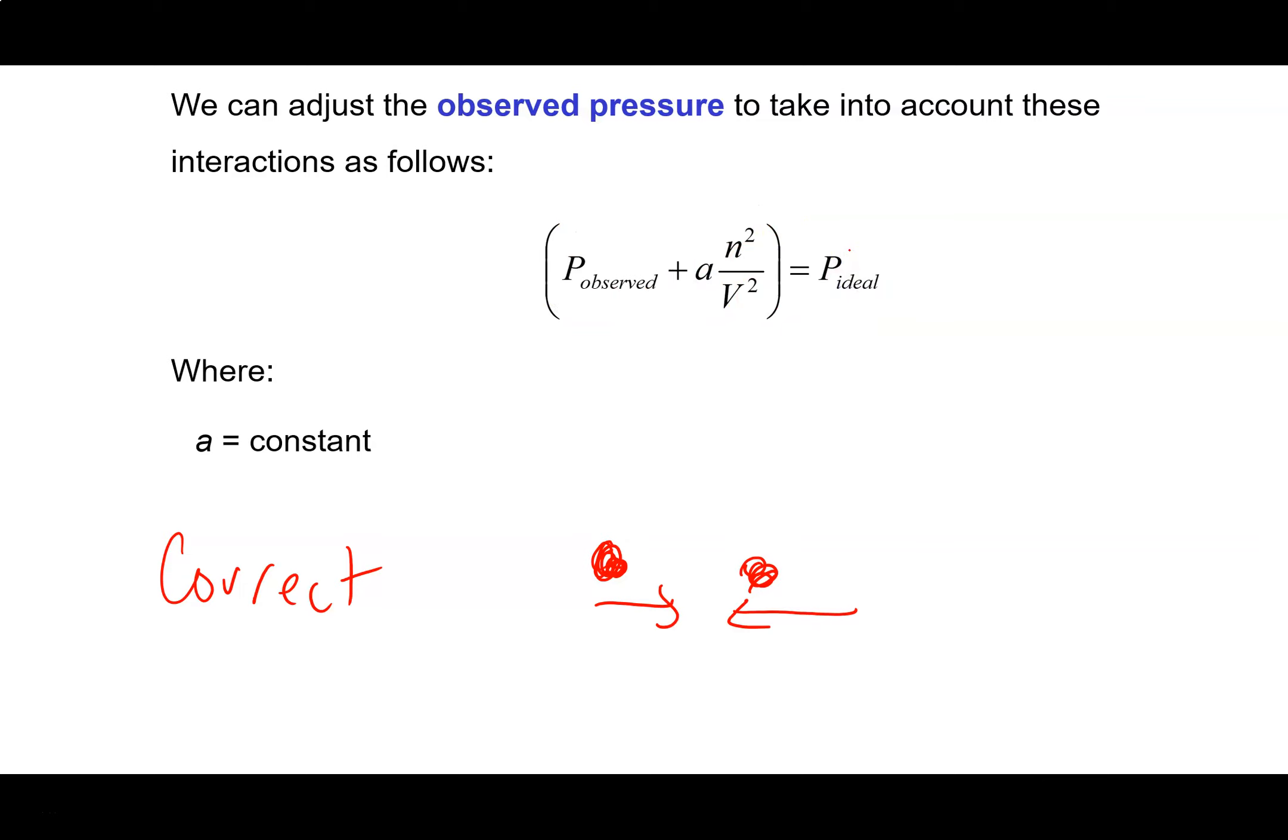The pressure correction term is n squared over V squared times a constant A, which is characteristic of your gas. A represents the attractiveness between particles, so we can correct for non-ideal pressure this way.